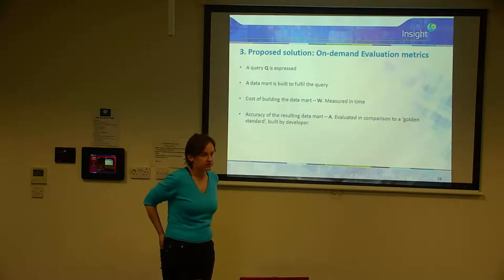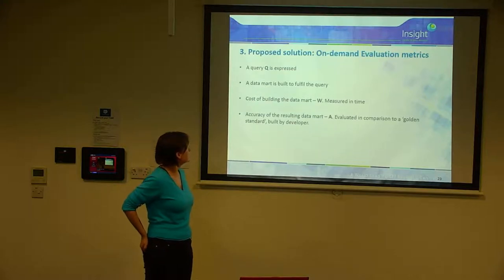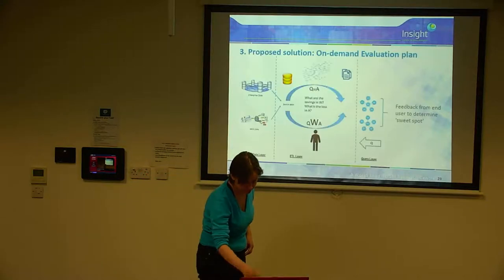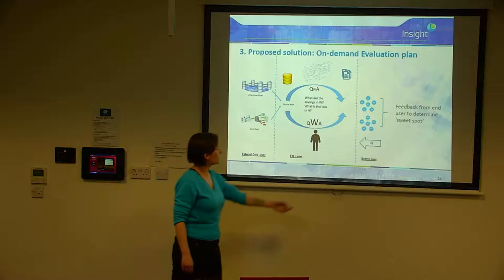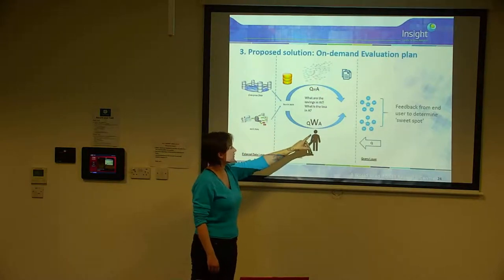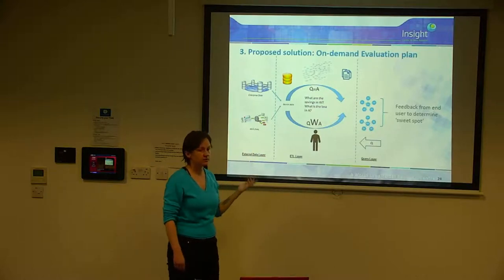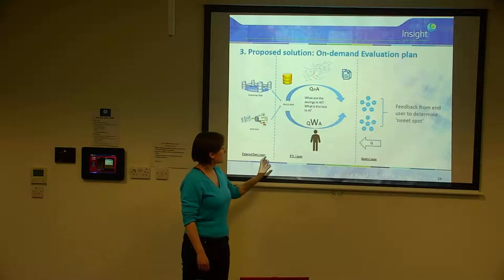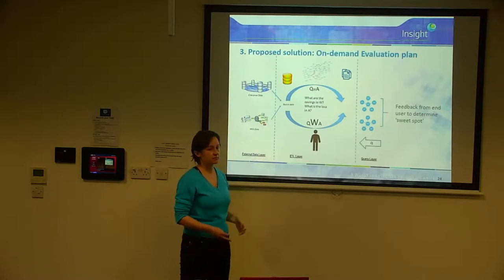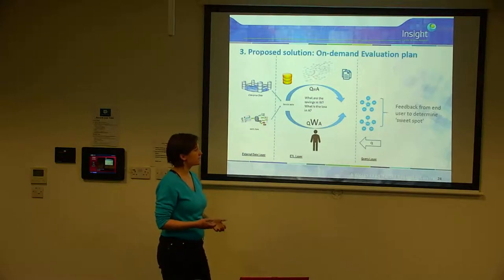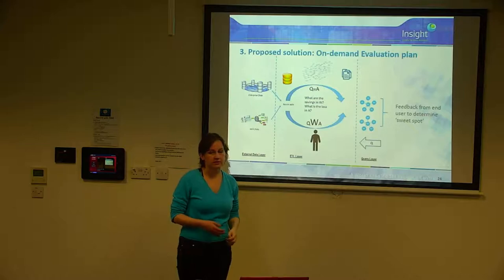For evaluating data marts, a few metrics are involved. A query Q is expressed; a data mart is built to fulfil it. There will be a cost W involved in building the data mart, most likely measured in time. The data mart will have a certain accuracy A, evaluated in comparison to a developer-built golden standard. So a query comes in, two data marks are created — one by the developer, one by my lightweight ETL system — and my questions are: what are the savings in W and what is the loss in A? The developer-built data mart will have high cost but high accuracy. We'll use end-user feedback to determine the sweet spot between savings and accuracy.